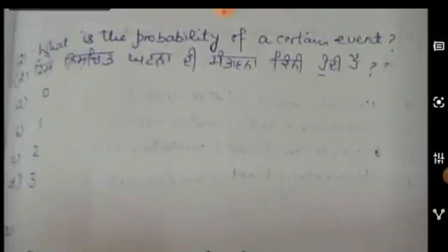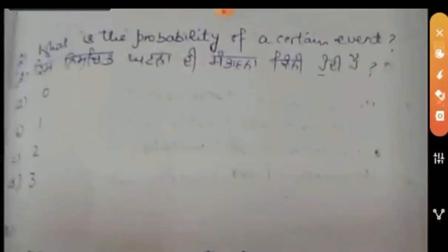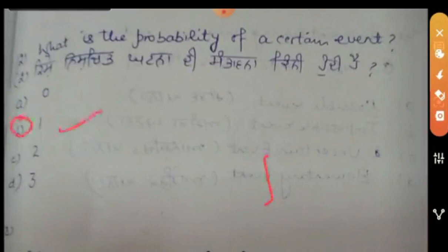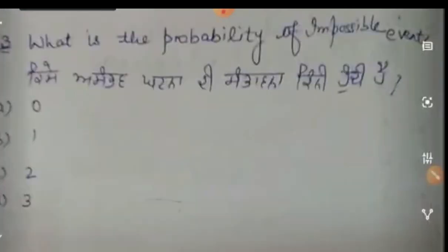Come to the second sum. What is the probability of a certain event? A certain event means an event that is definite — it will definitely happen. The probability of an event always lies between 0 and 1. So the probability of a certain event will be 1. Our answer is 1.